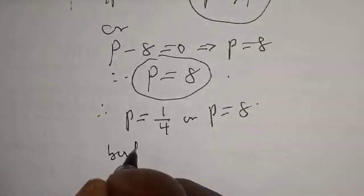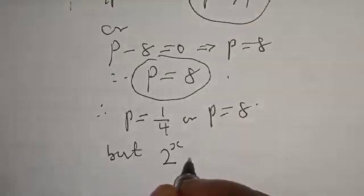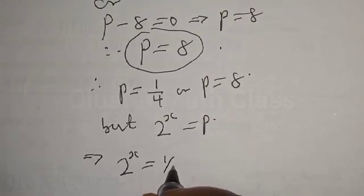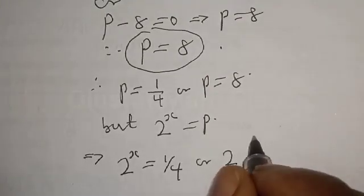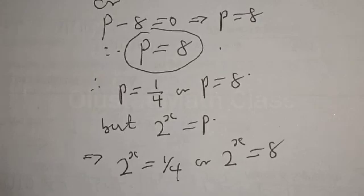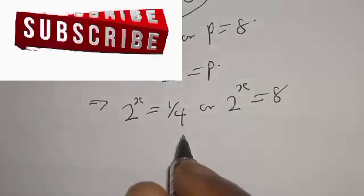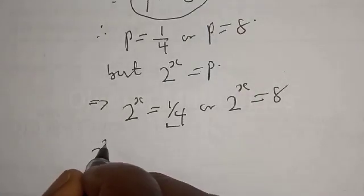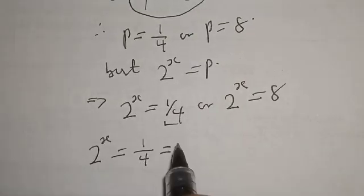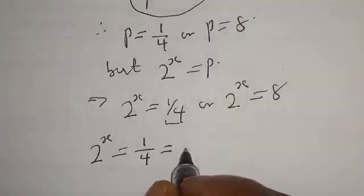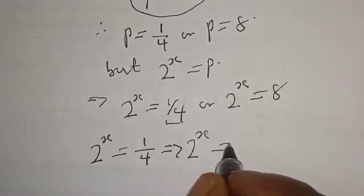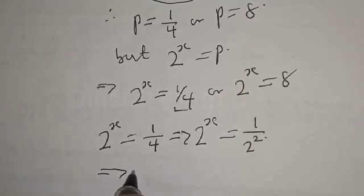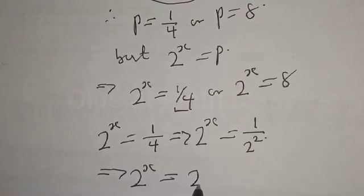But we said 2 raised to power x is equal to p. This implies that 2 raised to power x is equal to 1 over 4. Now 1 over 4 is equal to 2 raised to power negative 2. This implies that 2 raised to power x is equal to 2 raised to power negative 2.